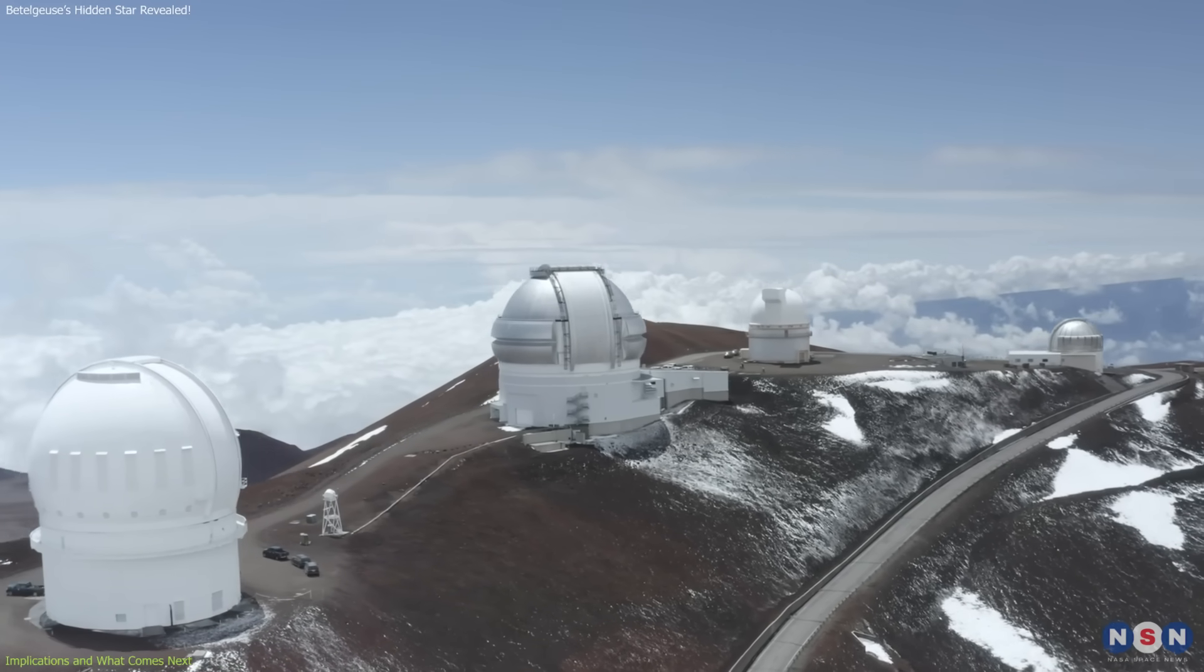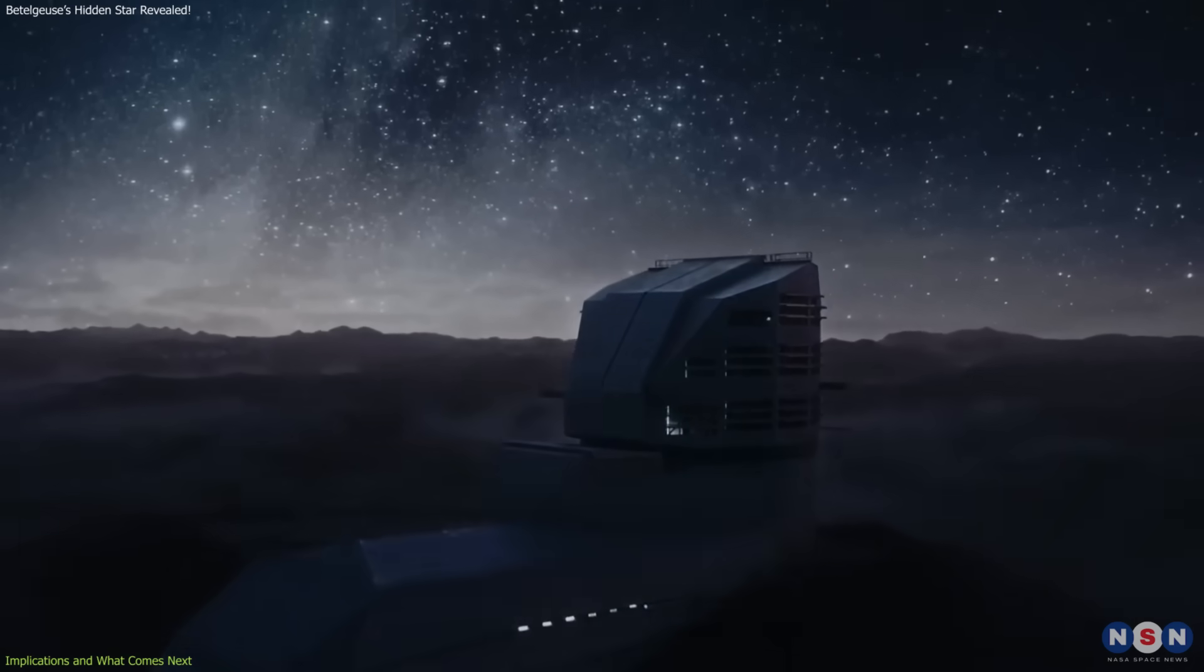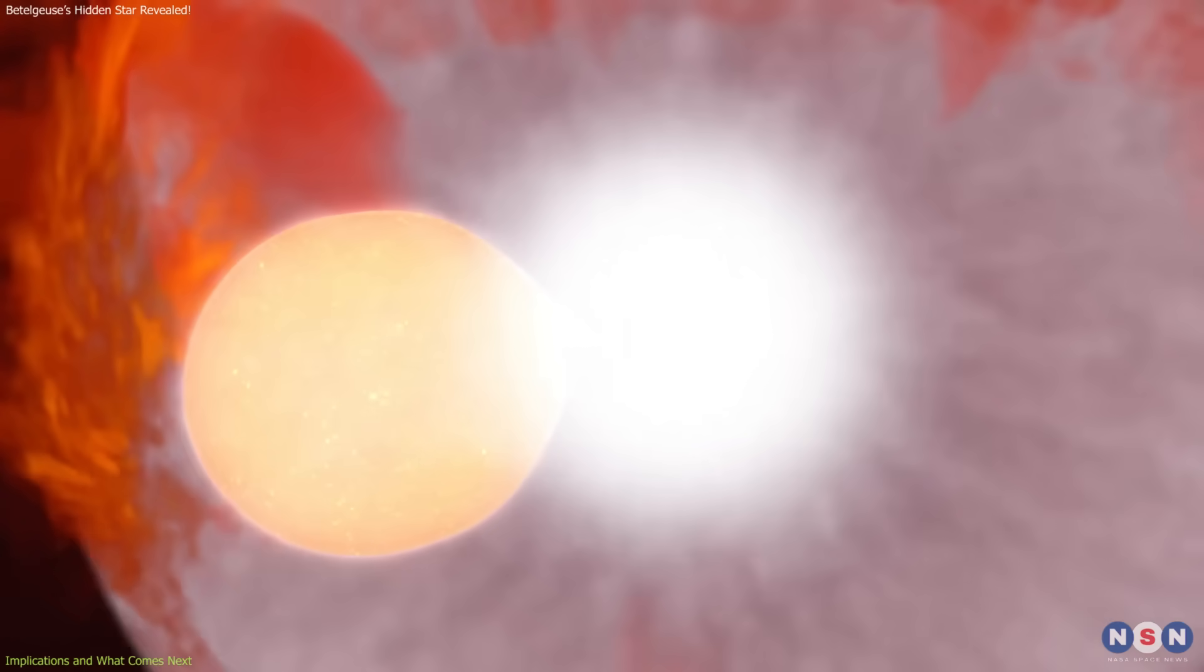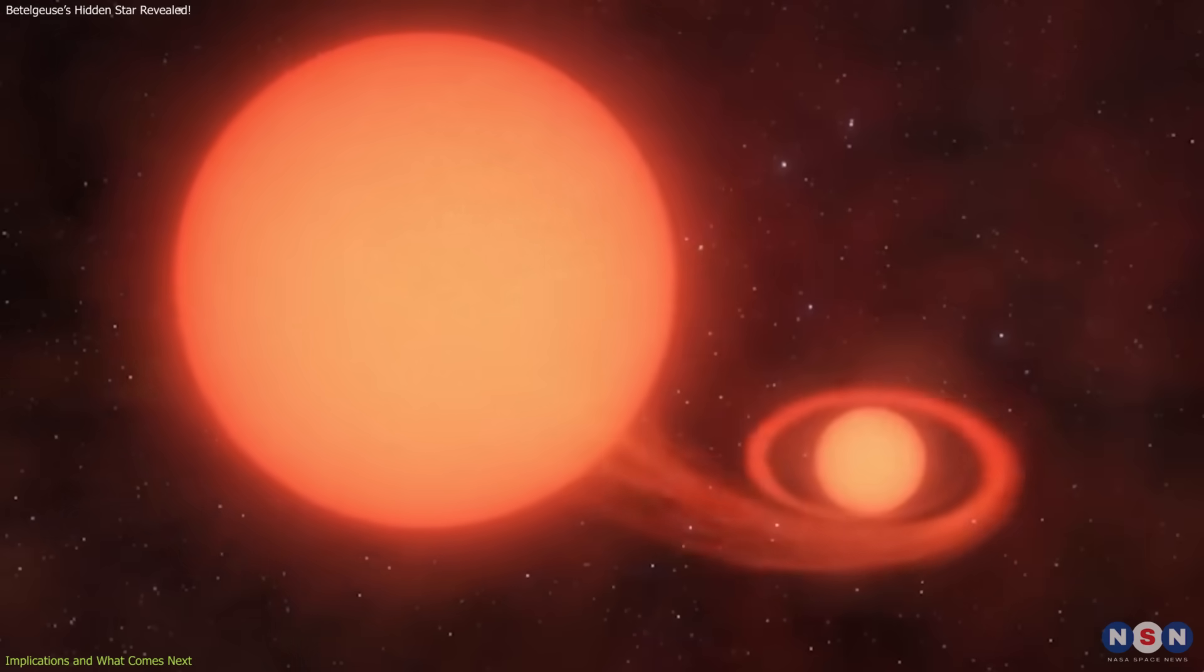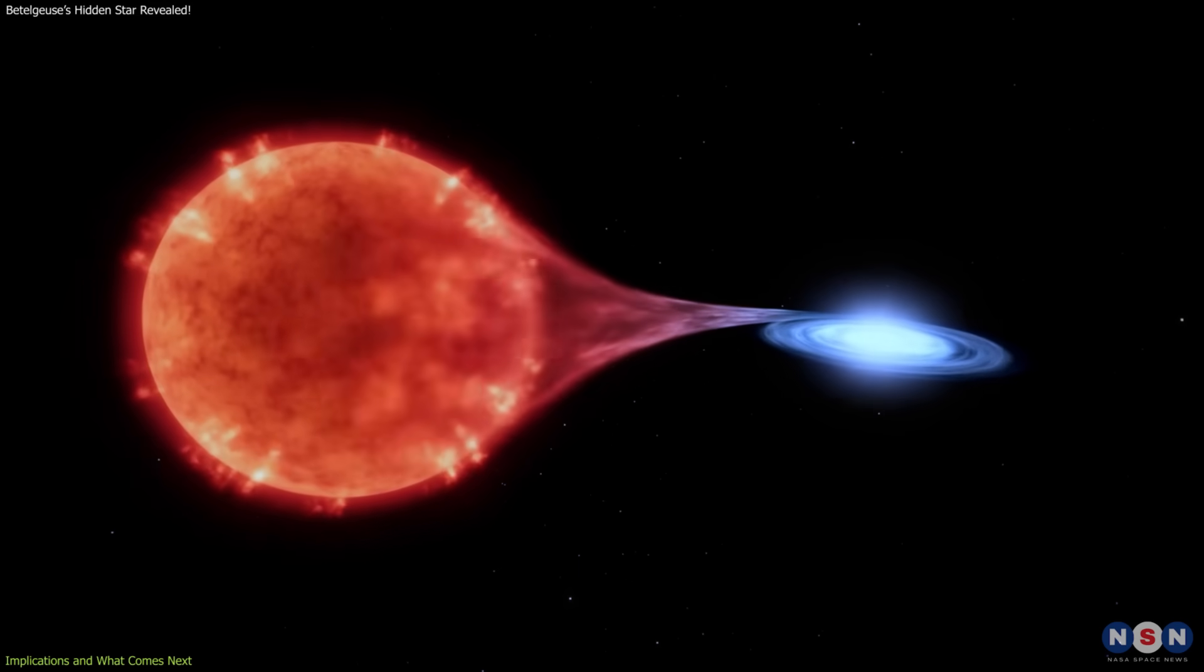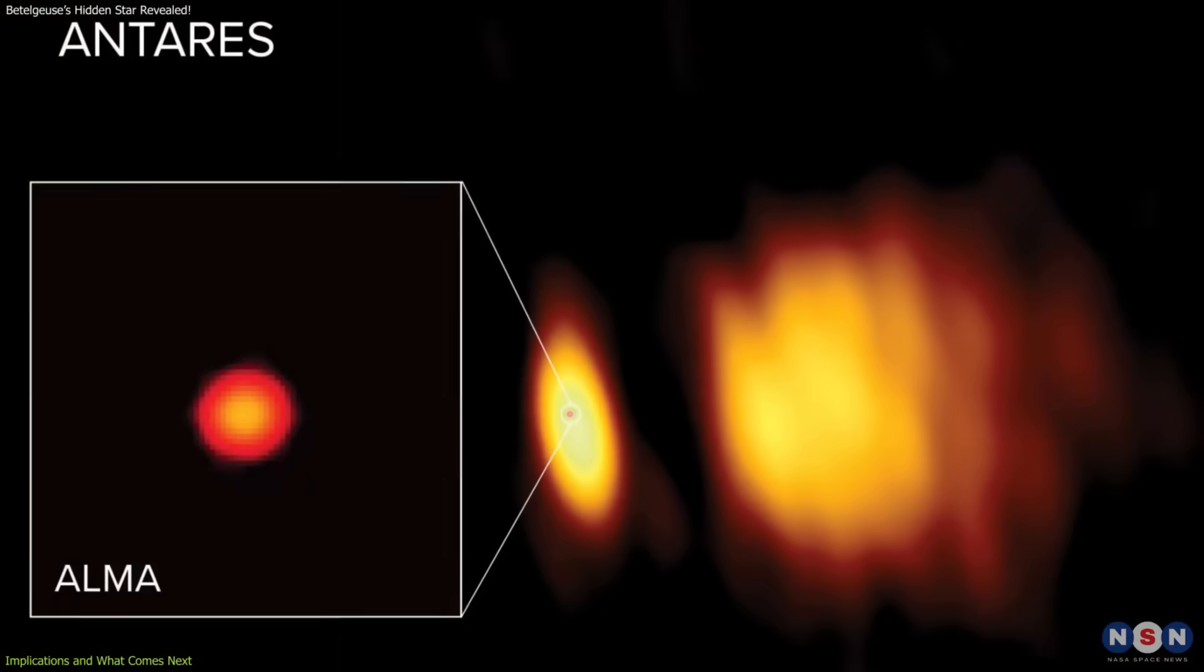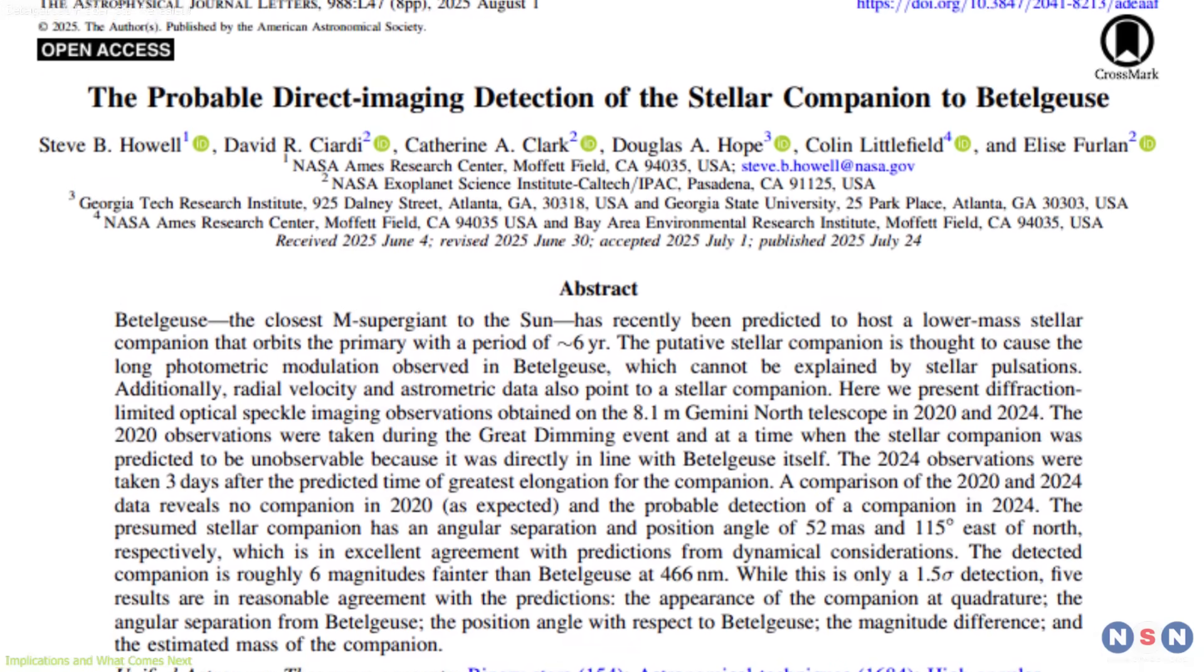Gemini North is likely to play a central role again, but other high-resolution facilities may also join the effort. Confirming the companion would turn a tentative signal into a landmark discovery. If confirmed, the system becomes a valuable case study in how massive stars live and die. It would provide a nearby laboratory for testing theories of binary interaction, stellar winds, and mass transfer in extreme conditions. Astronomers could refine models not only for it, but also for other red supergiants such as Antares.